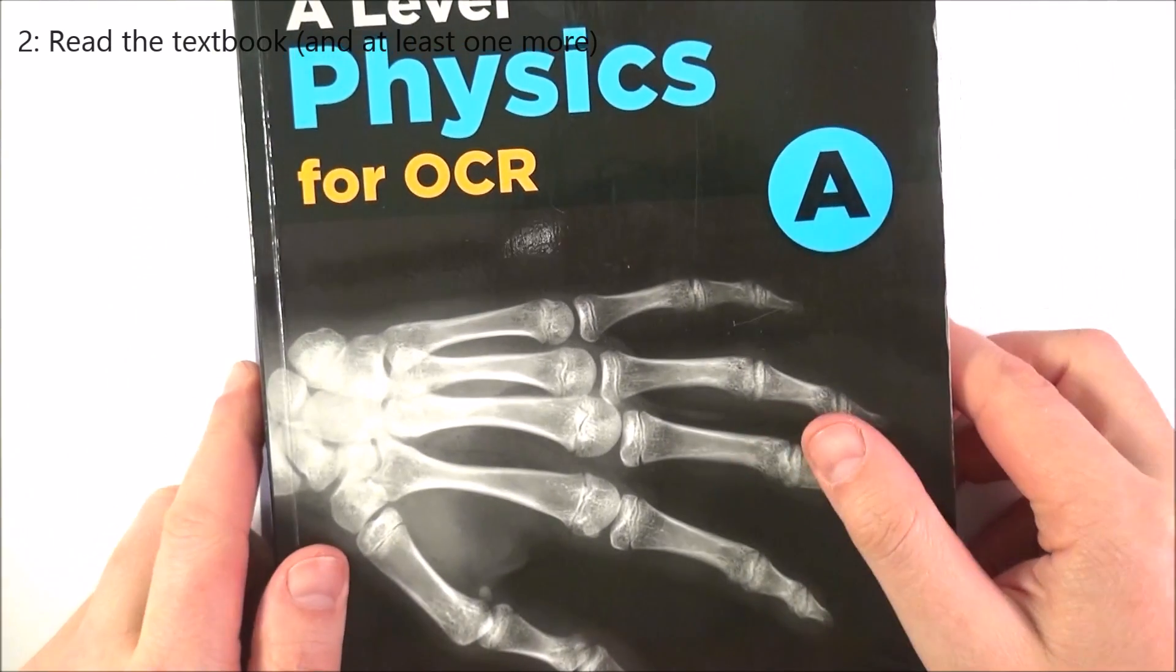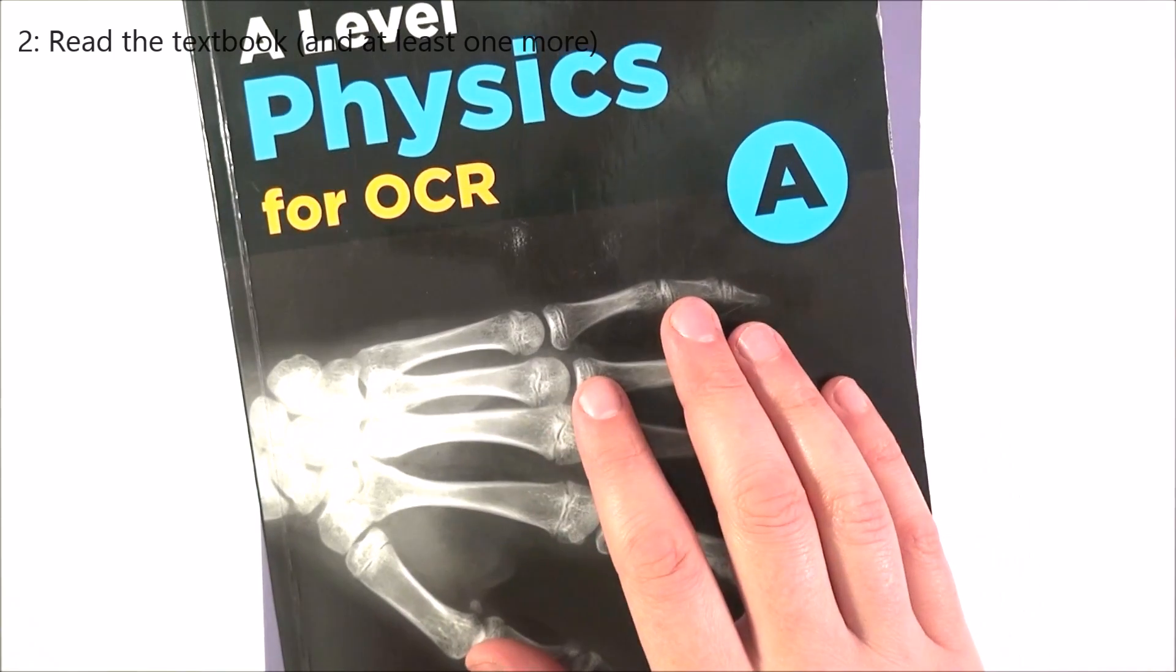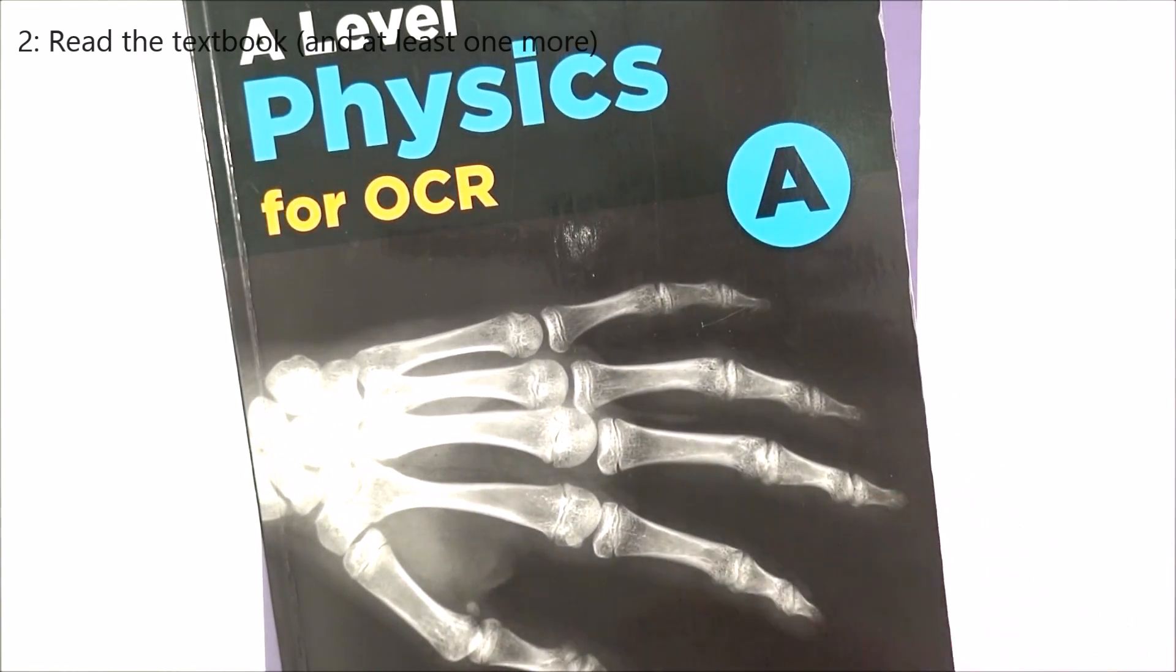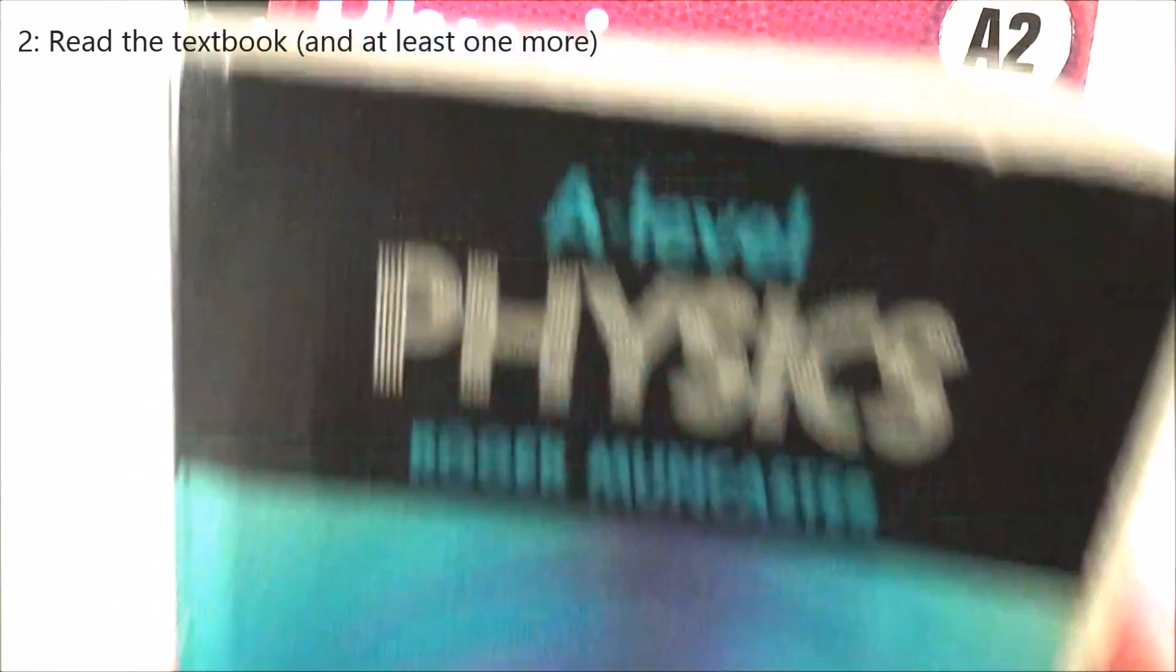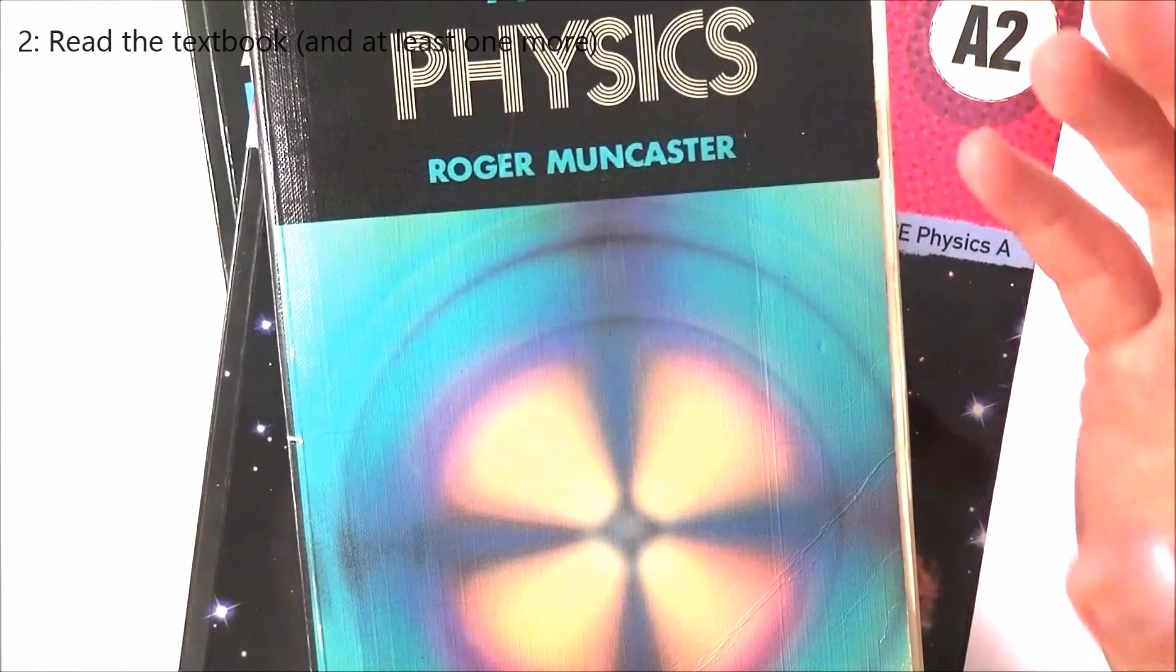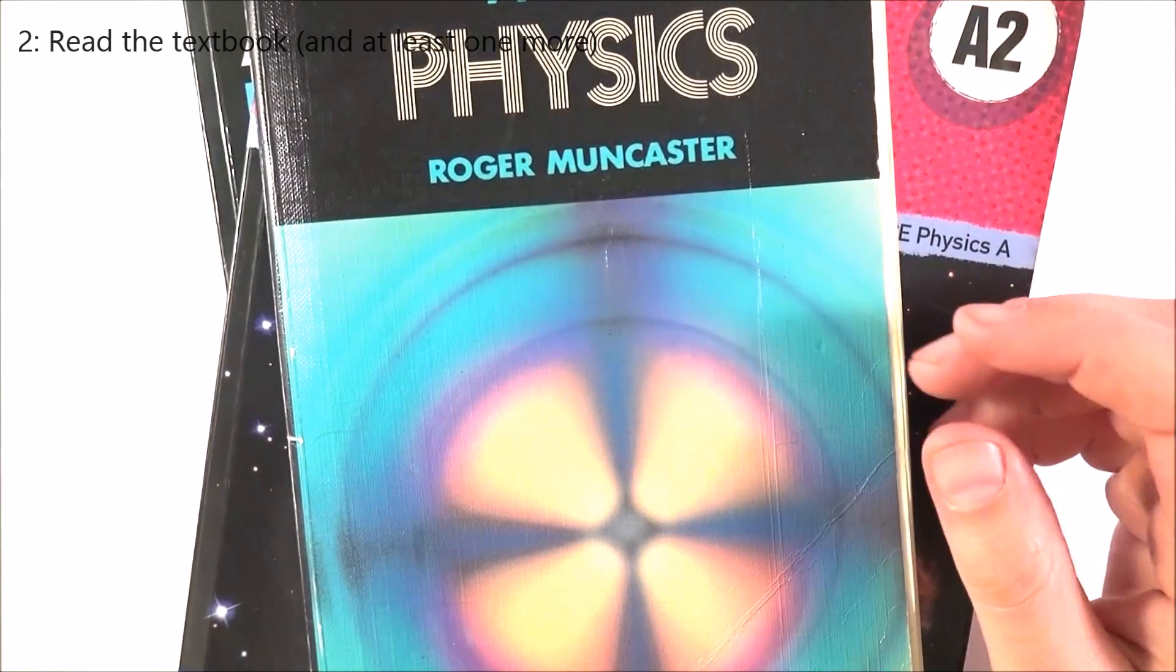Number two is you need to read your textbook. You've probably carried a textbook around in your bag but read the whole textbook again, then read another textbook, and if you can read another one. The more books that you read, even though the physics is exactly the same inside, the more different opinions you get, the better you're going to understand it.